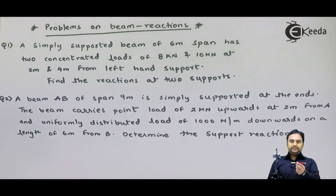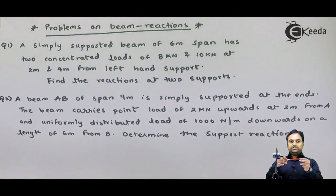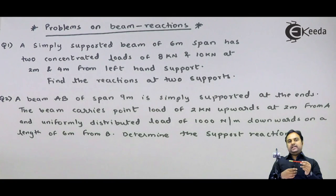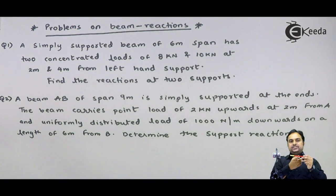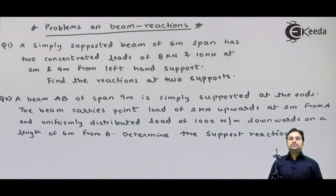If I consider this pen to be a beam subjected to various forces, then the resultant of these forces would try to disturb the beam. But if we apply an equilibrium force in the opposite direction, that will cancel the resultant and the beam would be brought back to its initial stable condition.